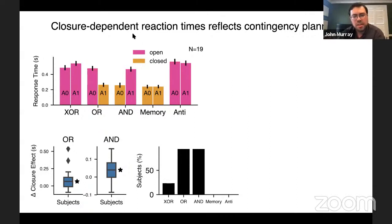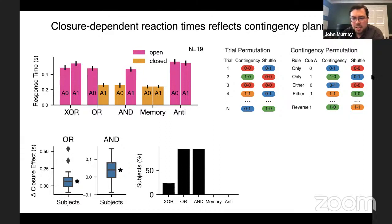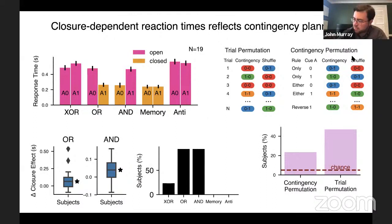To test contingency effects beyond closure more directly, permutation tests were performed by randomly assigning contingency state labels to different trials at the trial level or by shuffling the contingencies themselves, then using regression to see how much variance in response time was explained by contingency above and beyond closure. A substantial number of subjects showed explanatory power determined by contingency itself, potentially reflecting idiosyncratic subject-level differences in how contingencies map onto response times. However, neural data are ultimately needed to test the contingency hypothesis beyond closure.